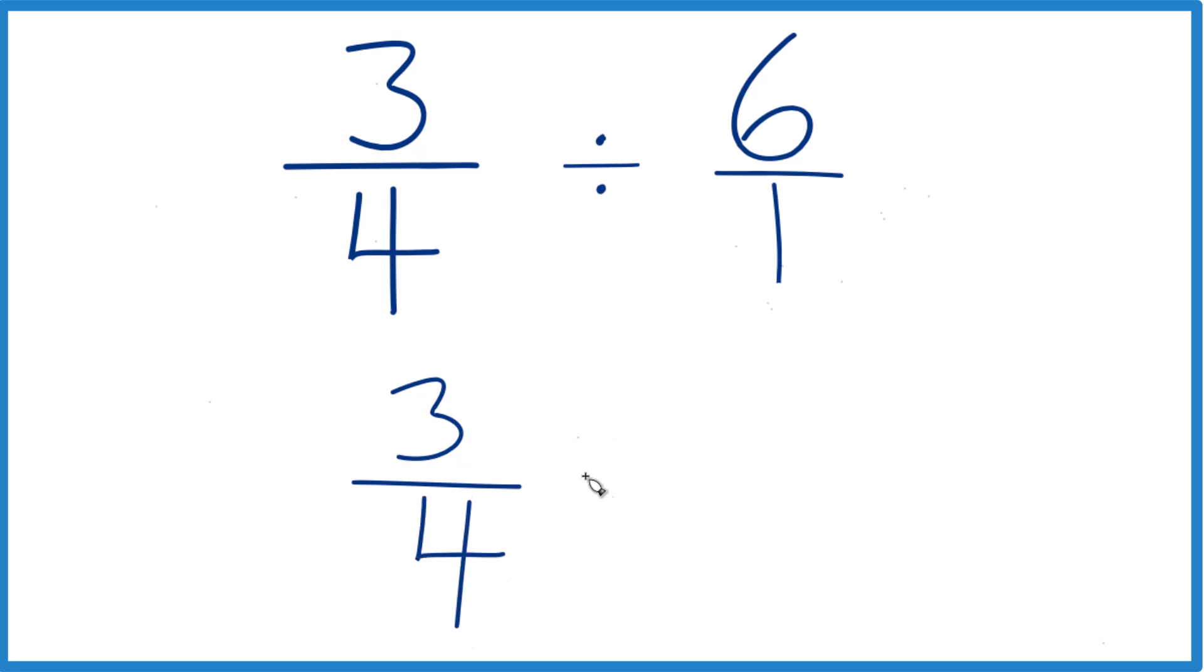So we take our 3 fourths, and instead of division, we're going to multiply by the reciprocal here. Move the numerator to the bottom, denominator to the top. So we end up with 1 over 6. That's 1 sixth.